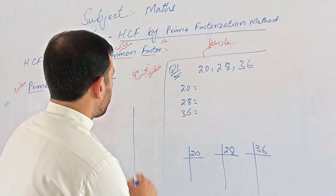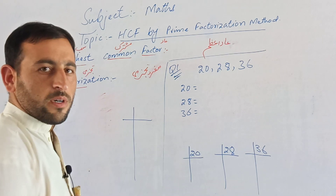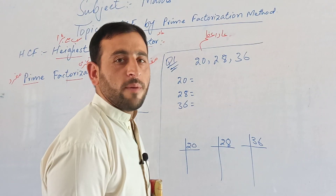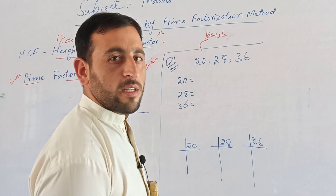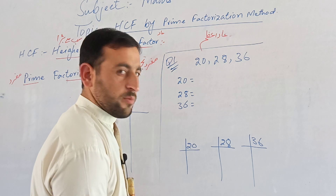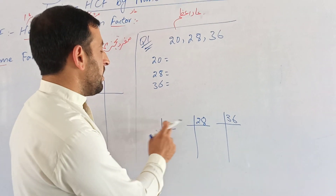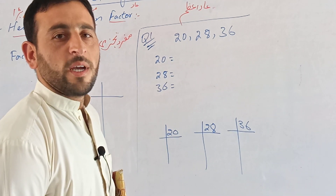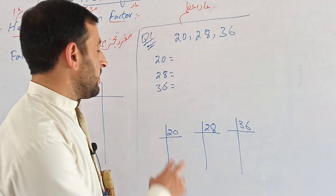This is the prime factorization symbol — it represents breaking a number down into its prime factors. For 20, we begin the prime factorization process. We check divisibility starting with the smallest prime, which is 2.